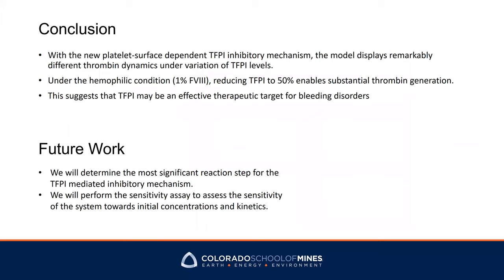In conclusion, the system displays remarkably different thrombin generation under different TFPI levels. Under hemophilic conditions, reducing TFPI to 50% can substantially alter thrombin generation and enable firm clot formation, suggesting that TFPI may be an effective therapeutic target for bleeding disorders. In the future, we will further investigate the coagulation system with this new model, determine the most significant reaction steps for TFPI-mediated inhibitory mechanisms, and perform sensitivity analysis to assess the sensitivity of the system towards initial concentrations and kinetics.